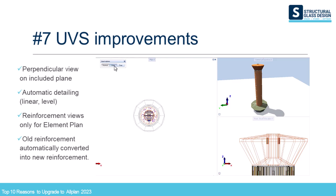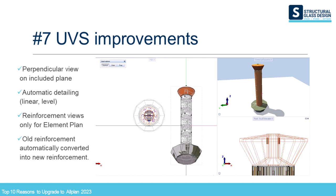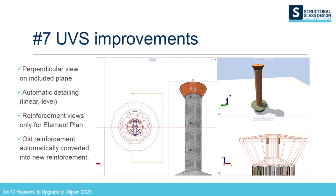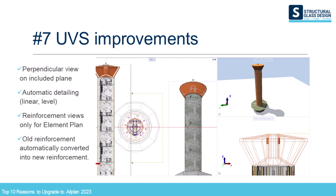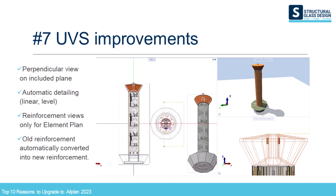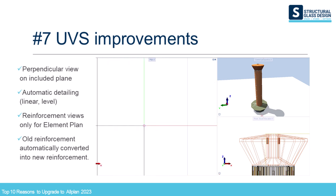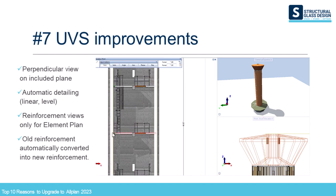Number 7. Unified views and sections are now more powerful than ever. With Allplan 2023 they finally include the last missing feature: automatic detailing. You can now generate views perpendicular to planes directly over the 3D model, and sections and views get automatic detailing both for linear and level dimensions. So with Allplan 2023 you can say goodbye to old reinforcement views and sections. The only place where you can still use them is within an element plan, as that technology is still based on the old system.